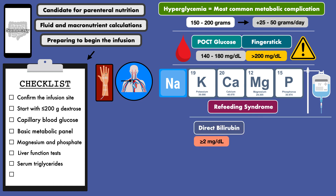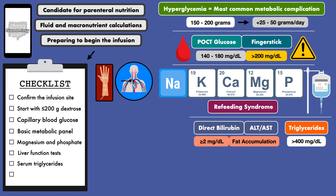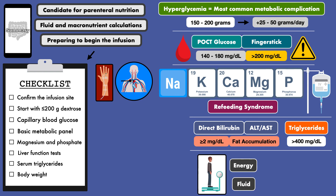A direct bilirubin of 2 or higher indicates that the liver is having difficulty clearing bile, so to avoid toxicities, some clinicians will remove trace elements like copper and manganese. An elevated ALT and/or AST suggests there is fat accumulation in the liver, and so the parenteral nutrition order should be reassessed with possible adjustments made to the total energy load, the carbohydrate load, the type of lipid used, or the number of hours the infusion lasts each day. If the serum triglycerides are greater than 400, then the lipid emulsion should be reduced or removed. Finally, you'll want to obtain a new body weight measurement, which will be helpful to determine if the appropriate energy and/or fluid load is being provided once the infusion is started.